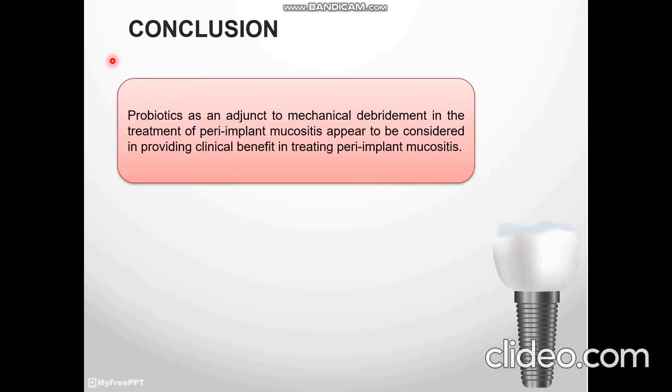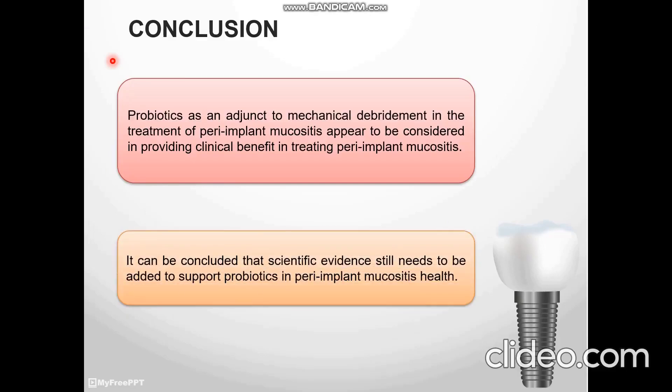Conclusion. Probiotics as an adjunct to mechanical debridement in the treatment of peri-implant mucositis appears to provide considerable clinical benefit in treating peri-implant mucositis. It can be concluded that further scientific evidence still needs to be gathered to support the use of probiotics in peri-implant mucositis.